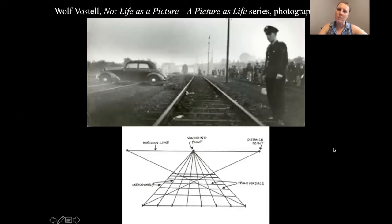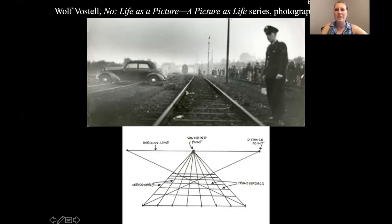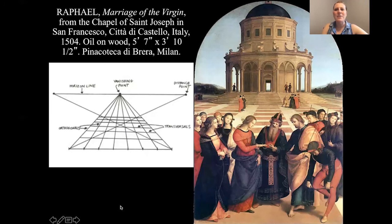There is also multi-point perspective that we can talk about in another video. We can see one-point perspective used everywhere from the Early Renaissance to the 1960s as we're seeing here. And then we have another Raphael painting where again you can see those orthogonals receding back into space, giving us that very clear depiction of space and depth — with a foreground, a middle ground, and a background — and that vanishing point being right about here on that building.